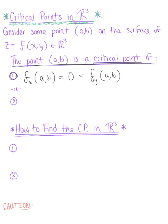This is reminiscent of setting that first derivative equal to zero in R2. We also say that a point is a critical point if the partial derivative with respect to x and/or the partial derivative with respect to y does not exist at the point (a, b). Again, also reminiscent.